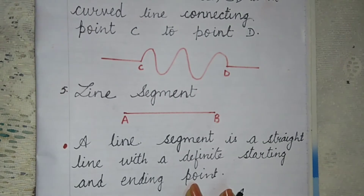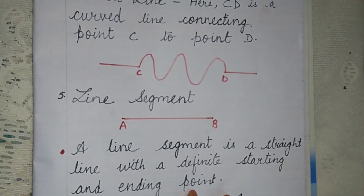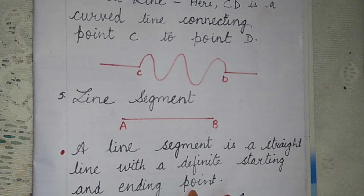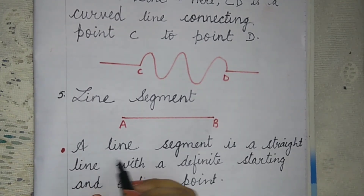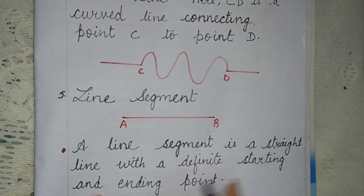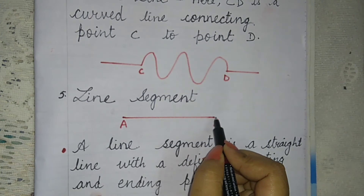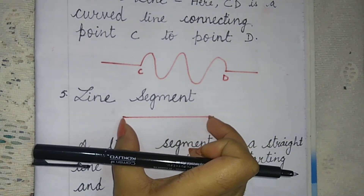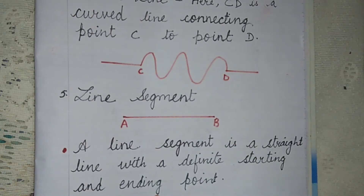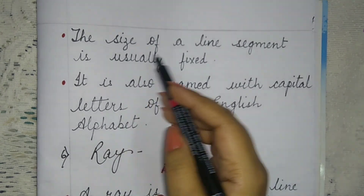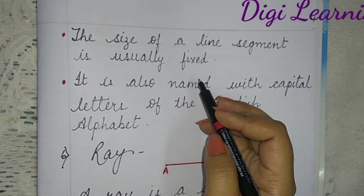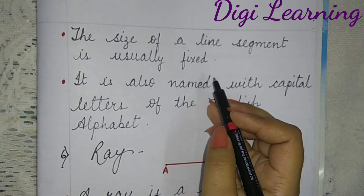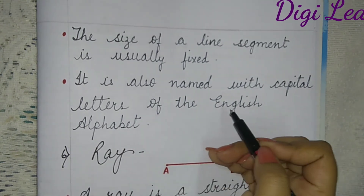Next comes to line segment. A line segment is a straight line with a definite starting and ending point — we cannot extend it. Here point A and point B are given, and a straight line is drawn between them — that is the line segment. We can measure it with a scale and a ruler. The size of a line segment is fixed from point A to point B.